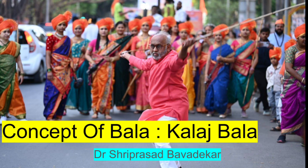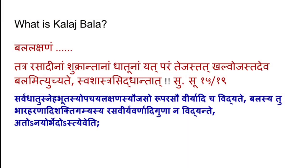So what is Kalaja Bala? You can see on the slide. Basically, Bala is Rasadi Naam, Shukranta Naam, Dhatu Naam, Yad Param Khalu Tejaha, Tath Kalu Oja, Tadeva Balam. That is in our context, in the context of Ayurveda, what is Bala? Rasadhi Naam, Shukranta Naam, Dhatu Naam, Yad Param Balam, Tath Oja. That is, only Oja is Bala for us.